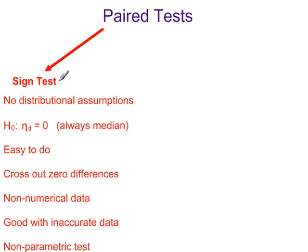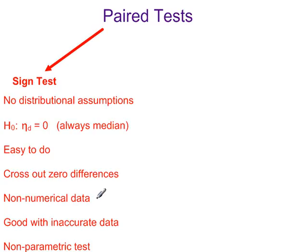The sign test has no distributional assumptions. H0 and H1 are always in terms of the population median difference — we always test the median and never the mean. It's easy to do: you cross out any zero differences. It can be done with non-numerical data, and it's good with inaccurate data.